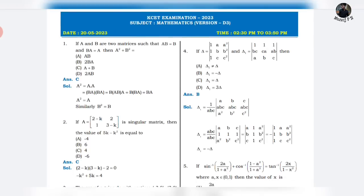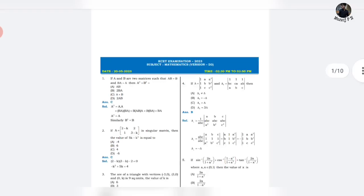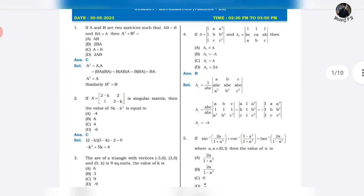Without any further delay, let's start. This is the D3 version, and you can update the other versions. Let's check the question paper with the solution. Question number one: If A and B are two matrices such that AB = B and BA = A, then A² + B² equals A. Option C: A + B. That's simple.